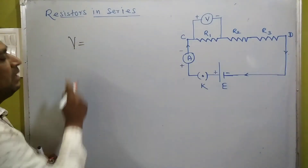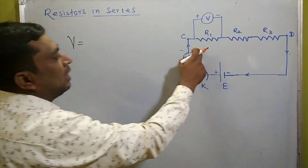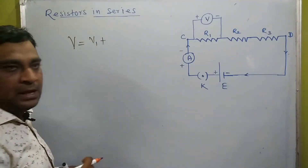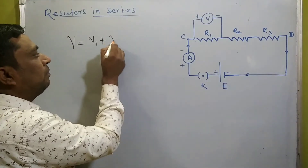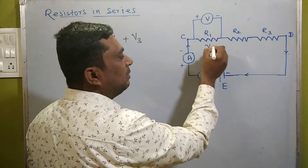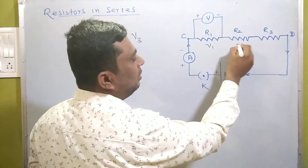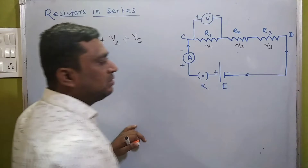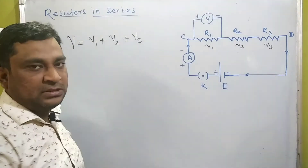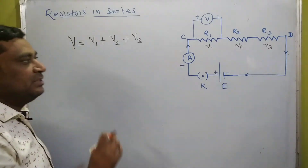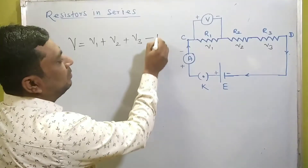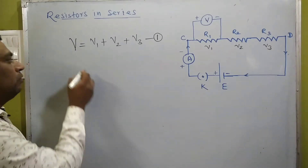The total potential difference V across R1, R2, and R3 can be written as: suppose across resistor R1 the potential drop is V1, across R2 it is V2, and across R3 it is V3. So V equals V1 plus V2 plus V3. This is equation number one. Now we have to apply Ohm's Law.